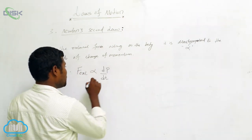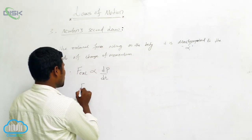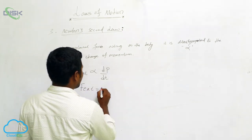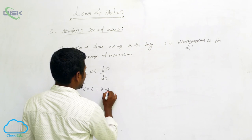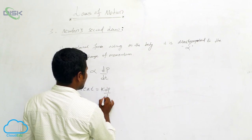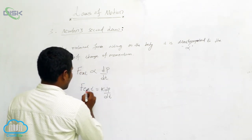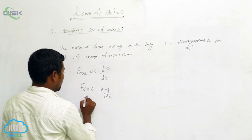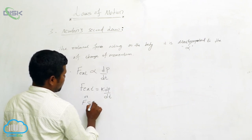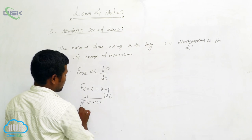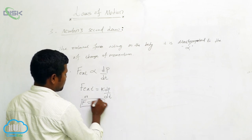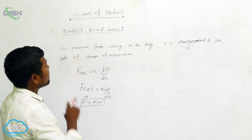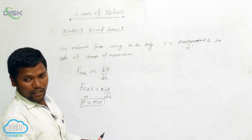If we remove the proportionality constant, we can write: F_external = k × (dp/dt). Or we can write it directly as F = ma. Now I am going to derive Newton's second law.